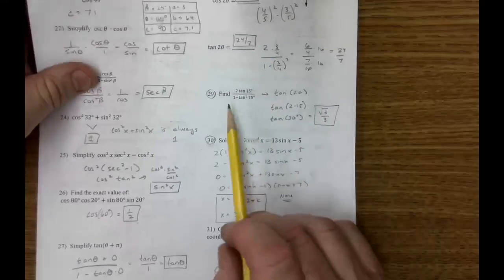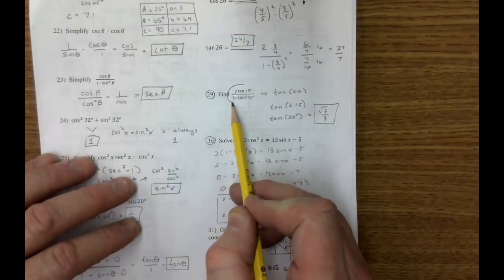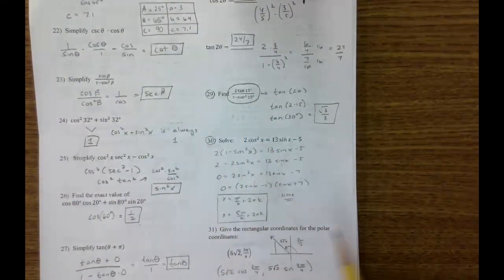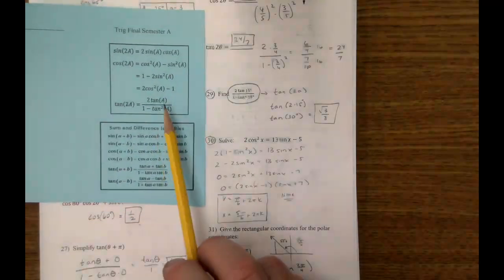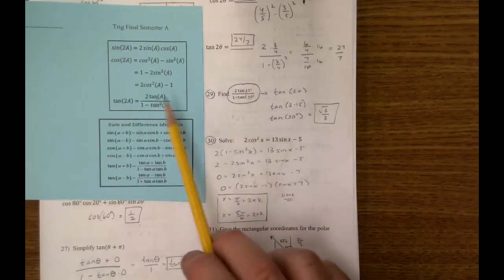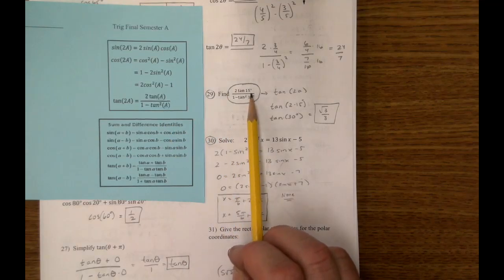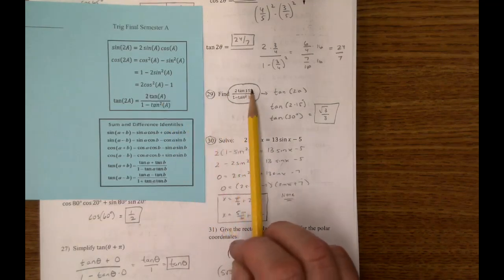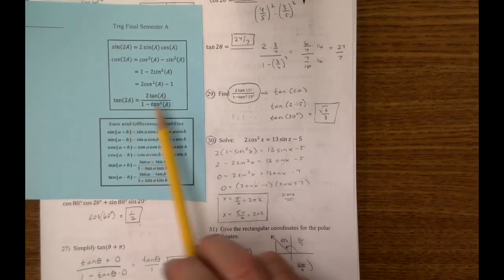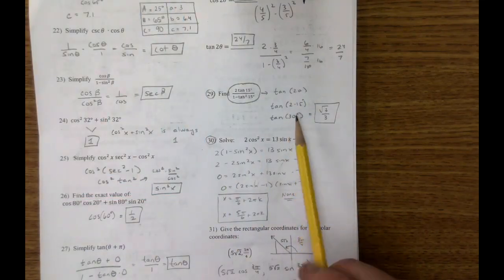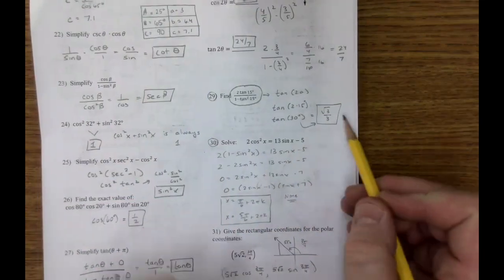Number 29. This is a formula. This looks very strange right here, but what it does is it matches this exactly. So this and this are the same thing. So A is 15. A is 15. But I want 2A. So that changes to 2 times 15 is 30, and then that's on the unit circle.